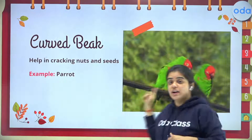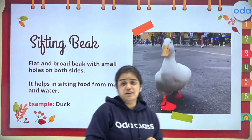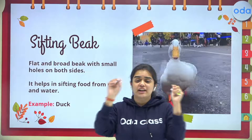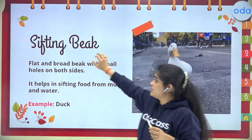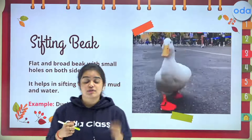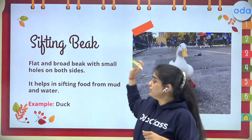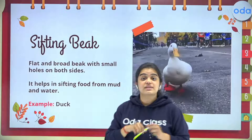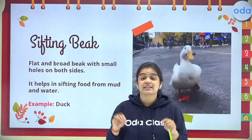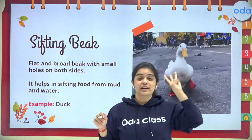The third type is the sifting beak, and the example is a duck. The sifting beak is flat and broad with small holes on the sides. The word 'sifting' means to segregate or separate something. Ducks sift food from mud and water — they pick up food from muddy water and use their beak to separate and filter it. That's why ducks have a sifting beak.